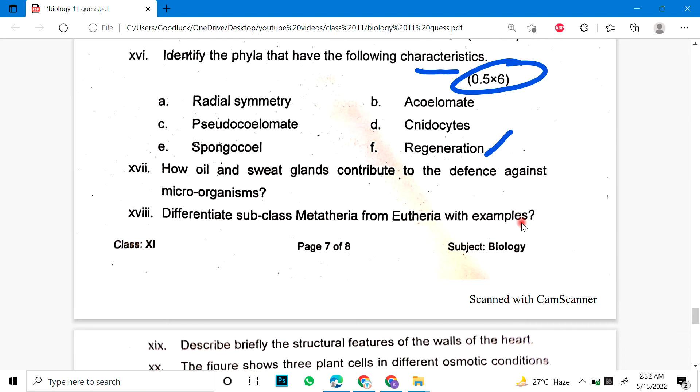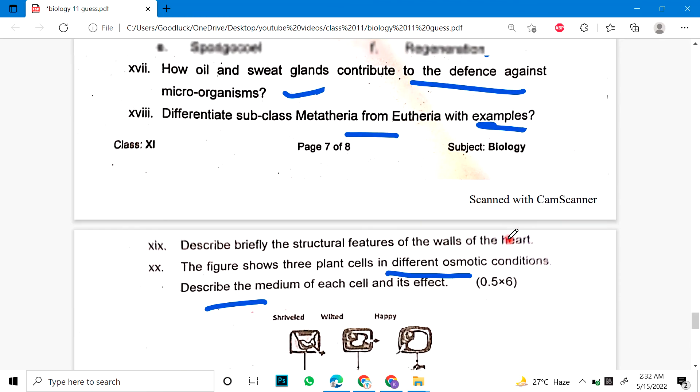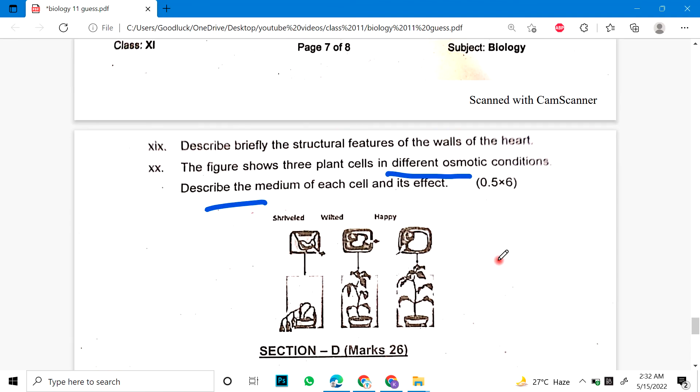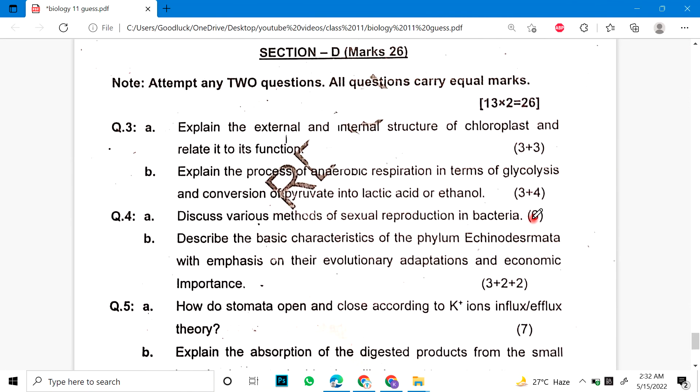Sixteenth: Differentiate between receptive mode and tympanic mode, each 1.5 marks. Seventeenth: How do oil and sweat glands contribute to the defense against microorganisms? Eighteenth: Differentiate between subclass Prototheria with examples. This is a very tough paper. Nineteenth: Describe briefly the structural features of the wall of the heart. Twentieth: The figure shows three plant cells in the osmotic condition. Describe its effect. This is a very important and difficult chapter. If you don't prepare these questions and look at their answers, you will have a lot of problems.